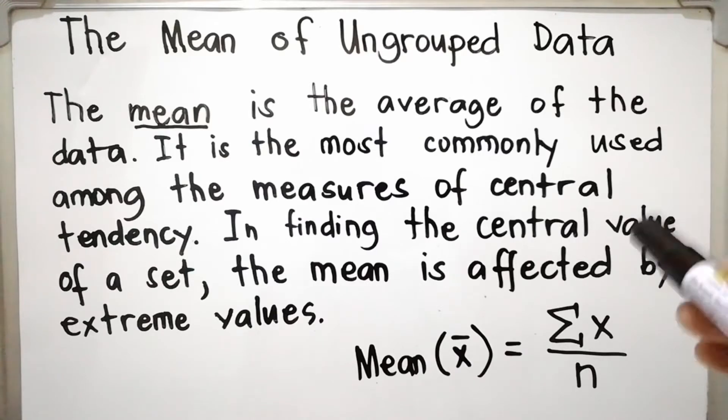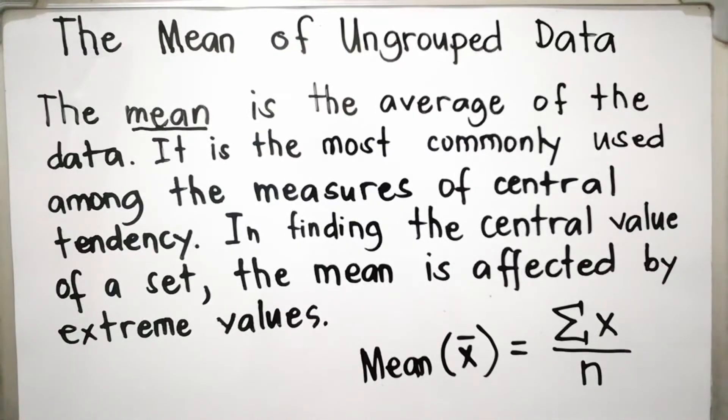What do you mean by extreme values? Those are the least value or the greatest value. This is the formula in finding the mean. Mean, or in symbol, it is x bar, is equal to the summation of x all over n. The summation of x is the sum of all values of x or scores divided by n.